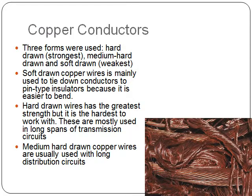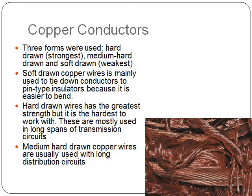There are three forms of copper conductors used. They are Hard Drawn, which is the strongest of the three; Medium Hard Drawn; and Soft Drawn, which is the weakest. Soft Drawn copper wires are mainly used to tie down conductors to pin-type insulators because they are easier to bend. Hard Drawn wires have the greatest strength but are the hardest to work with, and are mostly used in long spans of transmission circuits.